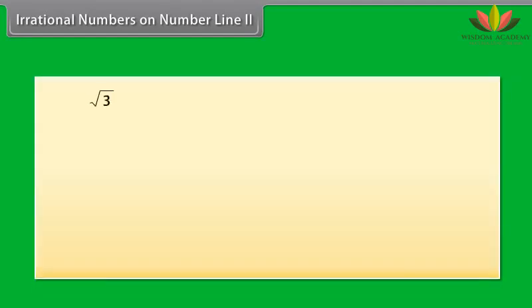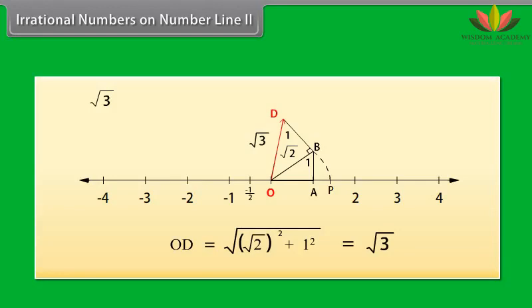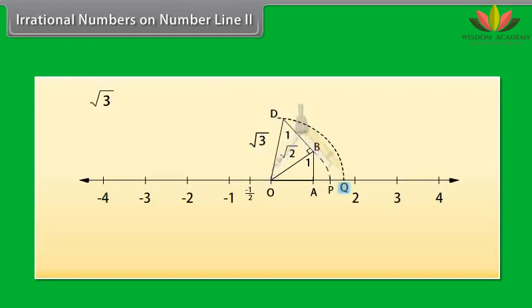Similarly, to locate √3 on the number line, we construct BD of unit length perpendicular to OB. Then by the Pythagorean theorem, OD = √(√2² + 1²) = √3. Using a compass with center O and radius OD, we draw an arc intersecting the number line at point Q. The point Q corresponds to √3 on the number line.